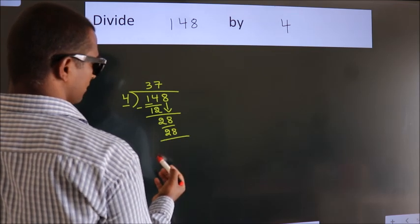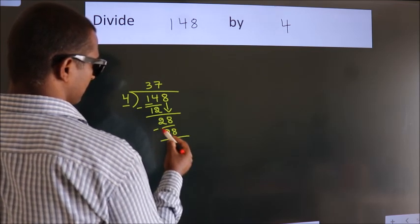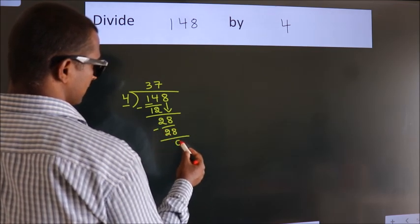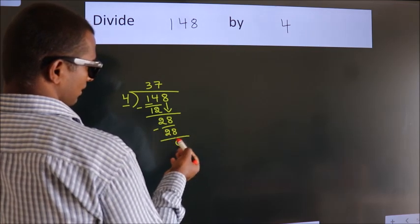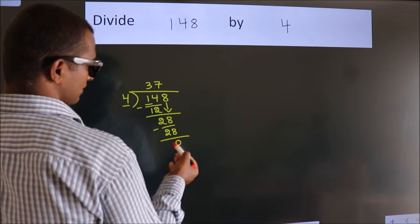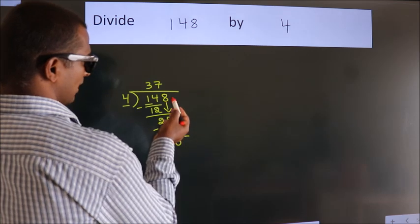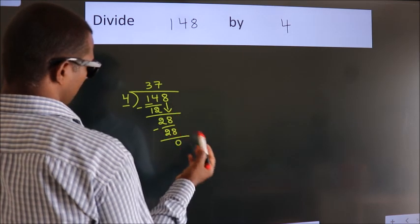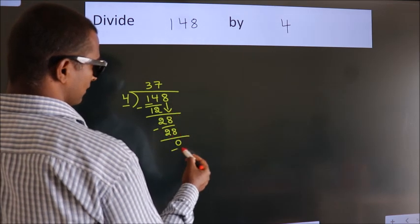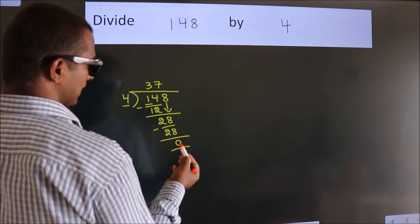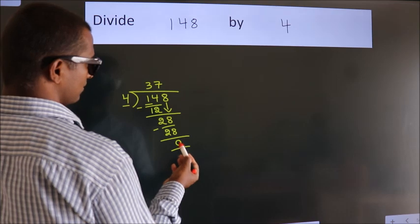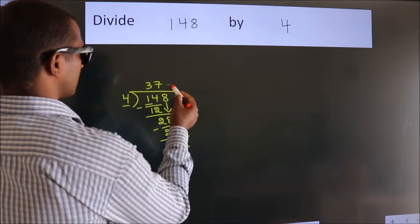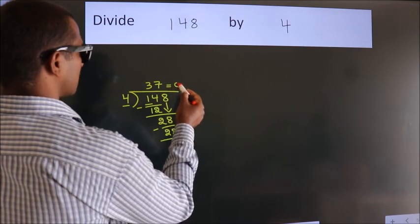Now we subtract and we get 0. After this, there are no more numbers to bring down. We got remainder 0, so this is our quotient.